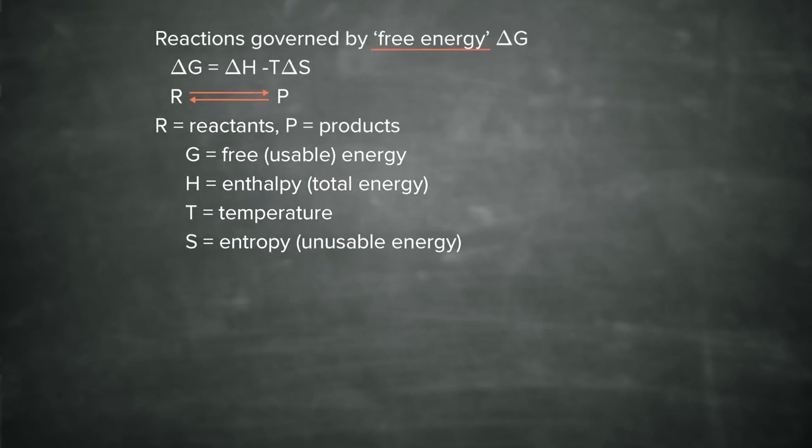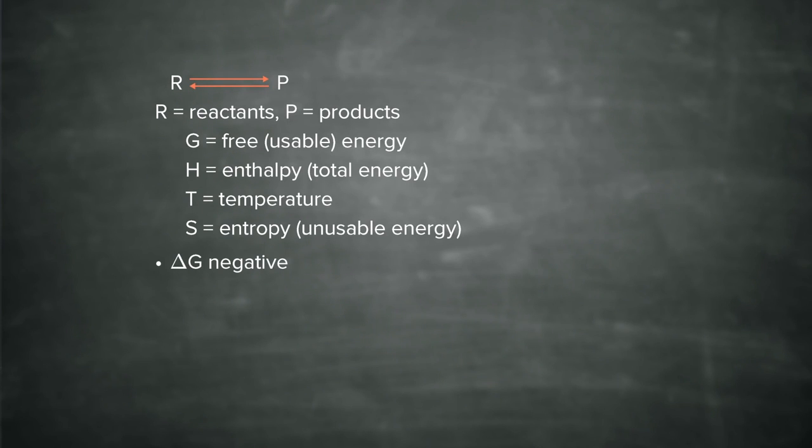Delta G can be negative, in which case energy is released during the reaction, and the reaction may proceed. It may even be spontaneous.